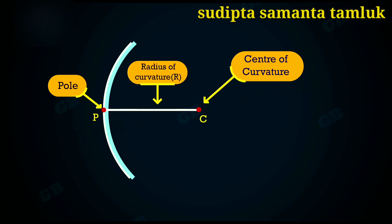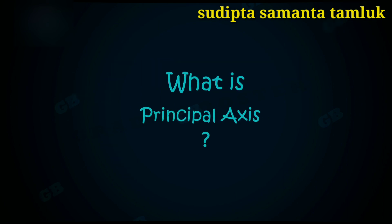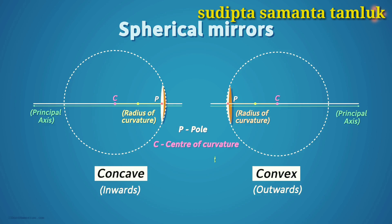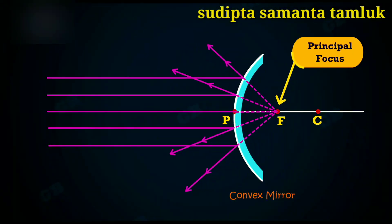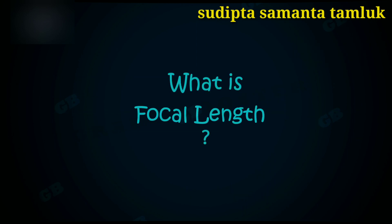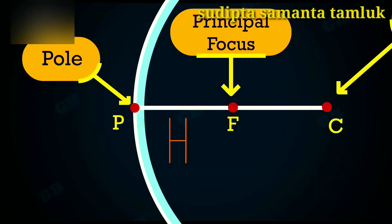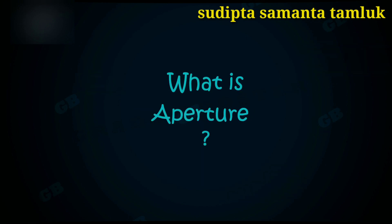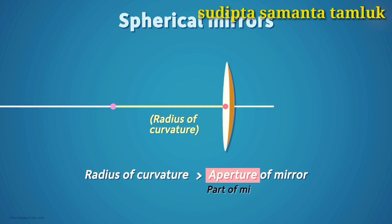Principal axis: joining the pole and the center of curvature with a line gives the principal axis. The midpoint of the line segment joining the pole P and the center of curvature C is called the focal point, represented by the letter F. Focal length: the distance between the pole and the principal focus of a spherical mirror is called the focal length, represented by F. Aperture: in simple terms, the aperture is that part of the mirror which is exposed to light.